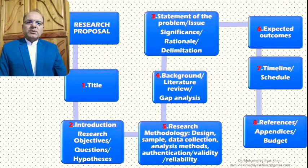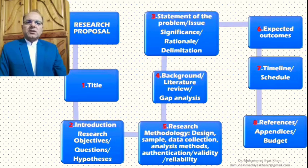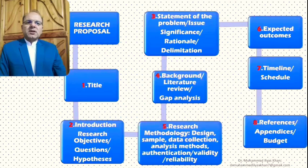Generally, every research proposal has a title, then an introductory part, then a statement of the problem and the issue significance, rationale, and delimitation. The fourth part is generally the background or literature review, which also includes gap analysis, followed by the research methodology section. This is then followed by the expected outcomes of the research process, a timeline and schedule, and of course references and appendices, and in some cases a budget. This is the general structure of the research proposal.